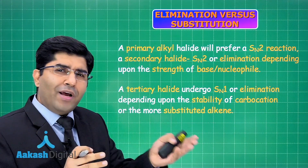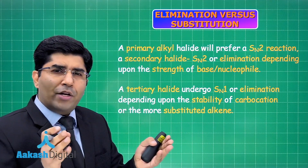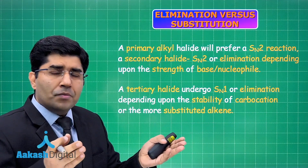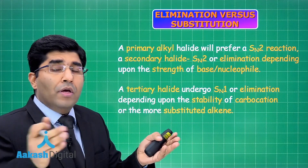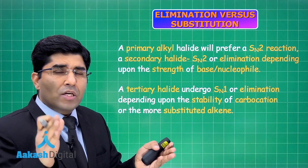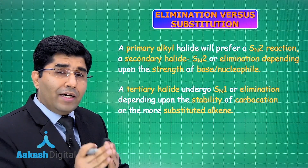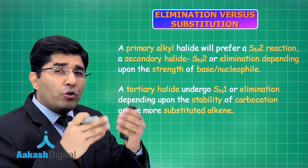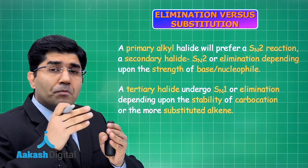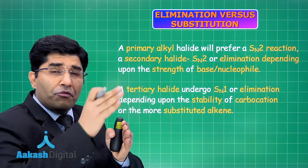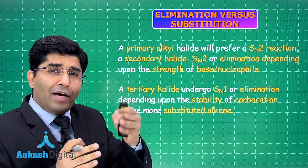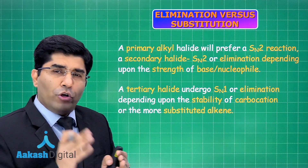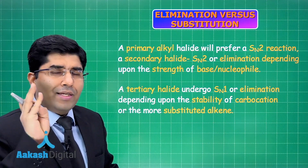It also depends on the nucleophile. If the nucleophile is water, water cannot eliminate the hydrogen from the alkyl halide very easily. But if it is NH₂⁻ or some other better nucleophile — a better base with more electron charge density — then elimination takes place. So to summarize: if the alkyl halide is primary, substitution is predominant; as the bulkiness increases from primary to tertiary, the reaction tends toward elimination.